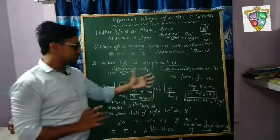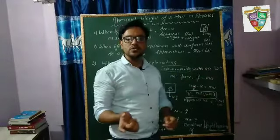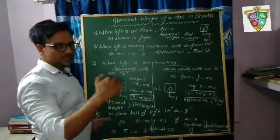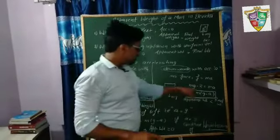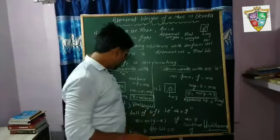And this is the case in which if we take this acceleration is equal to acceleration due to gravity, means in case of free fall, if wire of the lift is cut, if you put G here, then apparent weight is equal to zero.